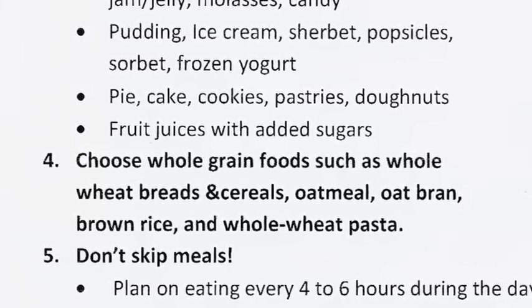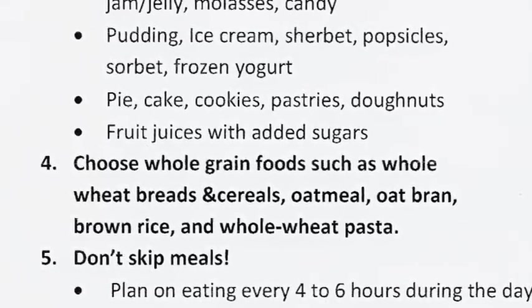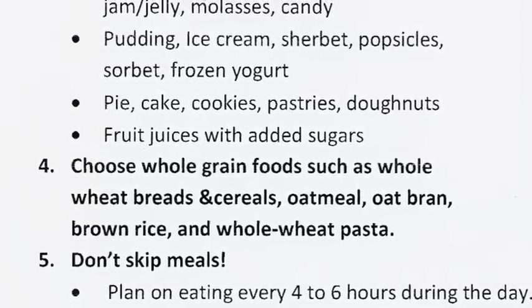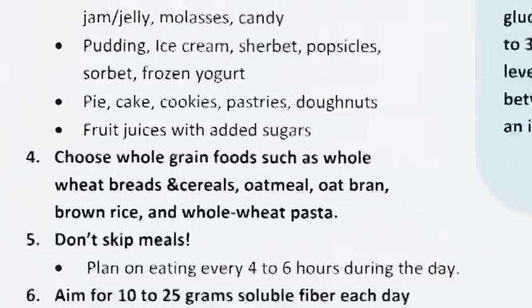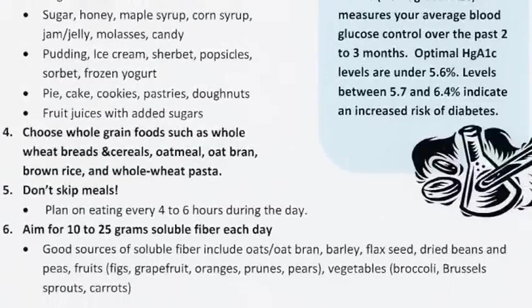Plan on eating every 4-6 hours during the day to keep your blood sugar level and prevent overeating at meal times. Aim for 10-25 grams of soluble fiber each day. Soluble fiber is found in oats, oat bran, and fruits and vegetables.